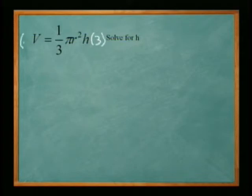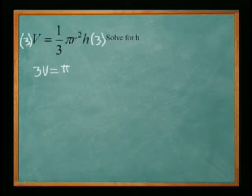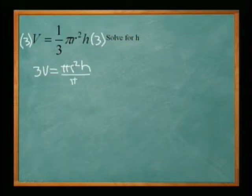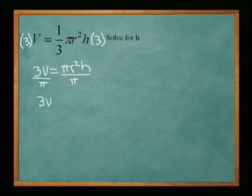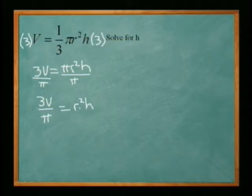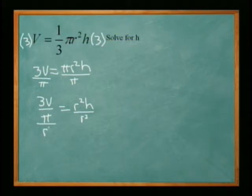My first step: I'm going to multiply both sides by three, so it becomes 3v equals pi r squared h. Pi is also being multiplied, so we can divide by pi on both sides, leaving us with 3v over pi equals r squared h. Then r squared is also being multiplied, so we divide by r squared on both sides, giving us 3v over pi r squared.